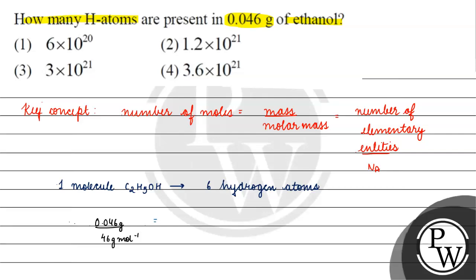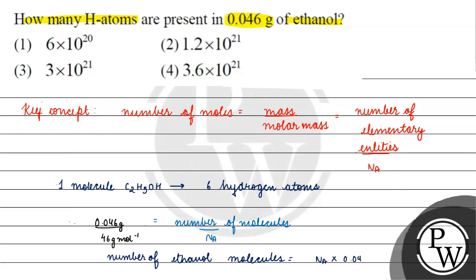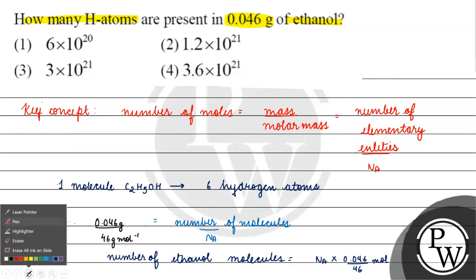46 gram per mole equals number of molecules divided by Avogadro's number. So number of ethanol molecules — we get 0.046 divided by 46 moles. We will solve this.